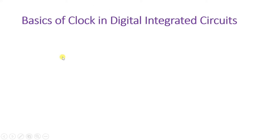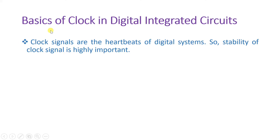Let us begin this session with the first agenda: basics of clock in digital integrated circuit. When we talk about clock signal, it is the heartbeat of a digital system. When we talk about sequential circuits, it is highly essential to have a clock signal, otherwise sequential circuits cannot function. Clock signals are heartbeats of the digital system and it is highly essential to have stability of the clock signal, else our system may fail in digital integrated circuit.